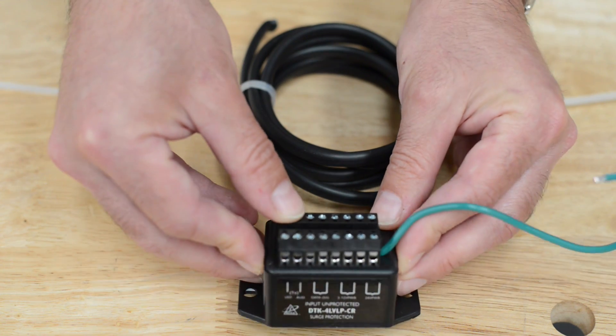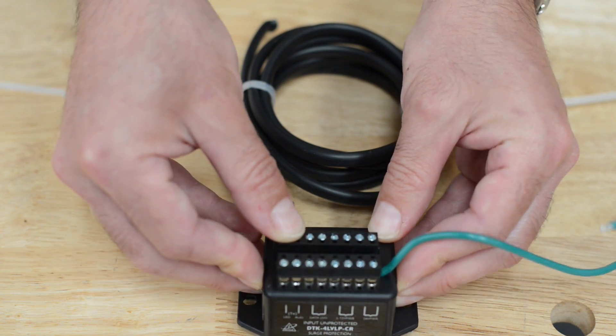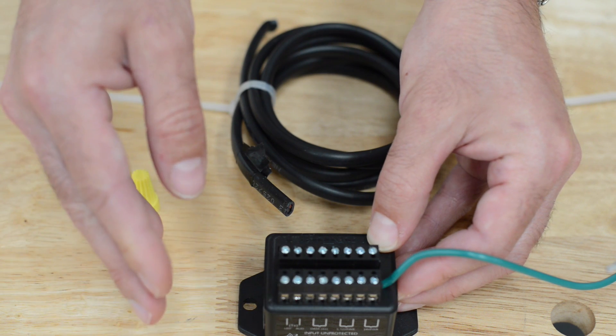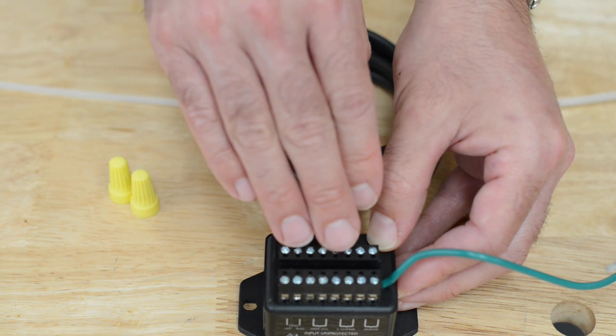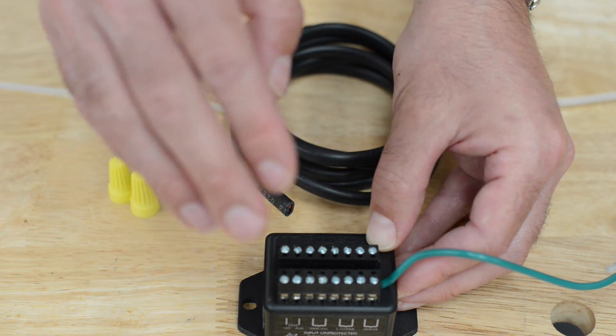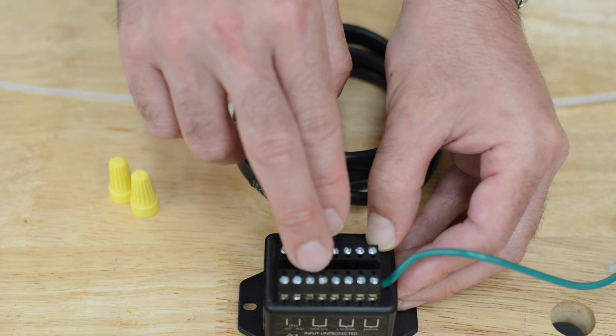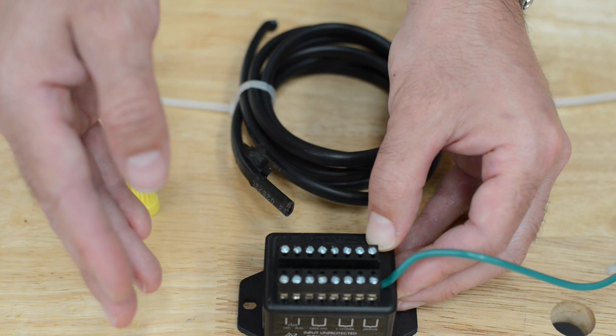Another way of looking at the input terminals on the surge suppressor is if you already have the wires going through the control board, the way to know where to wire them on here would be to designate these the same as they are on the control board.